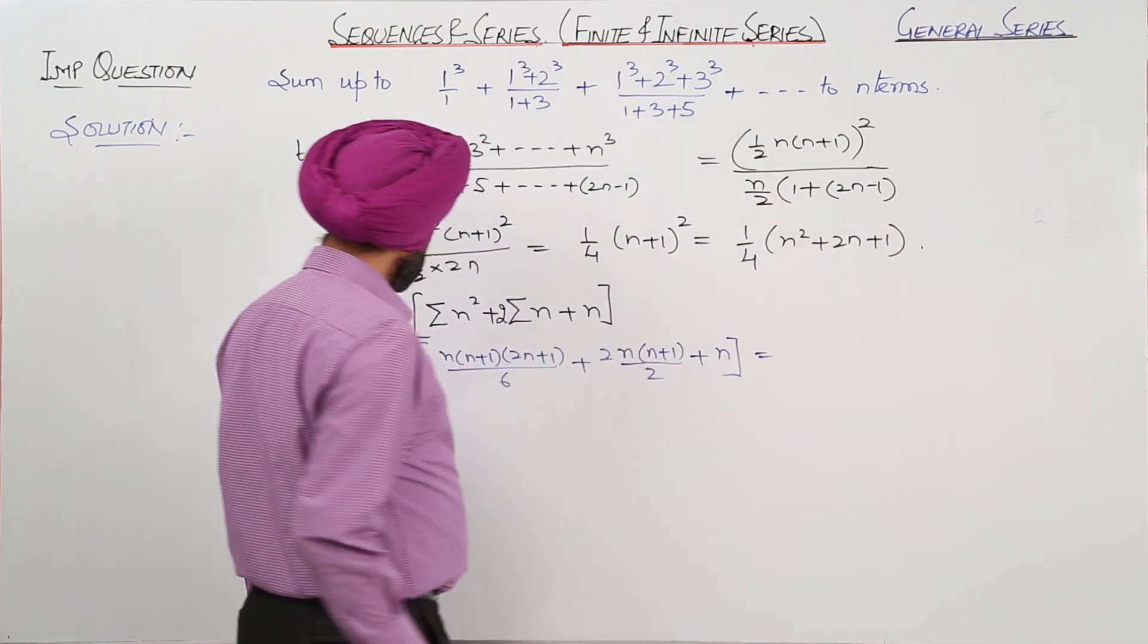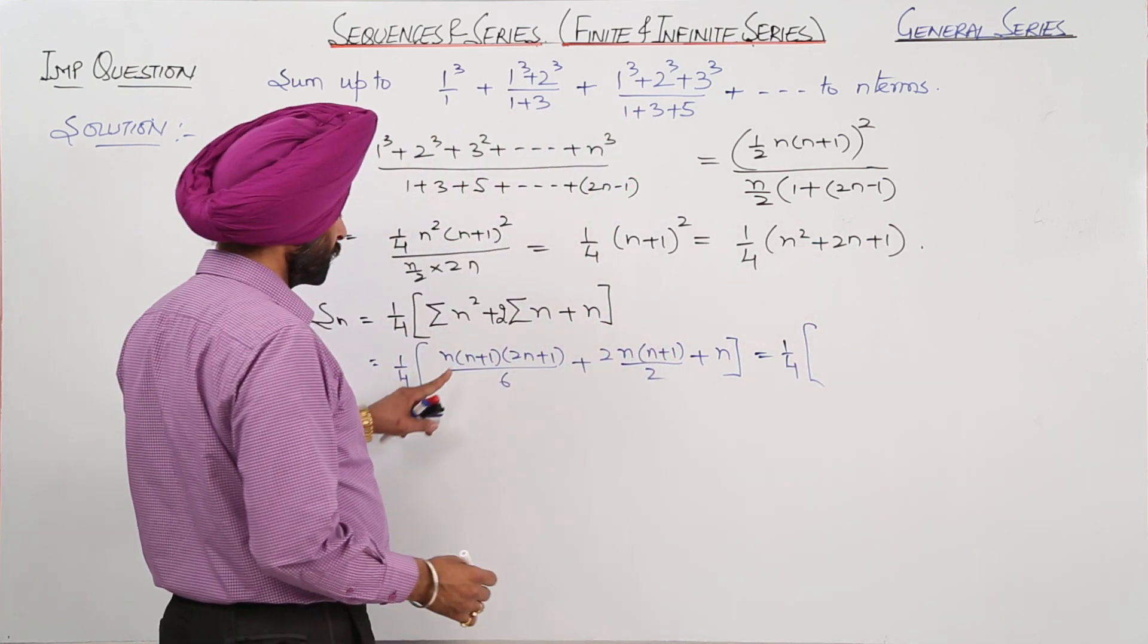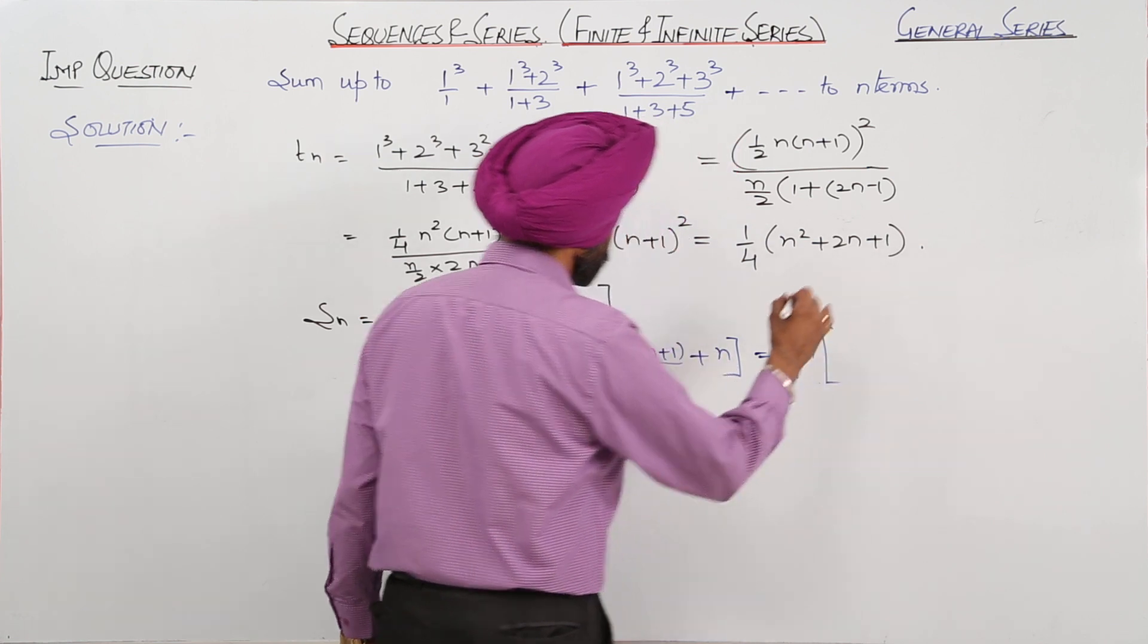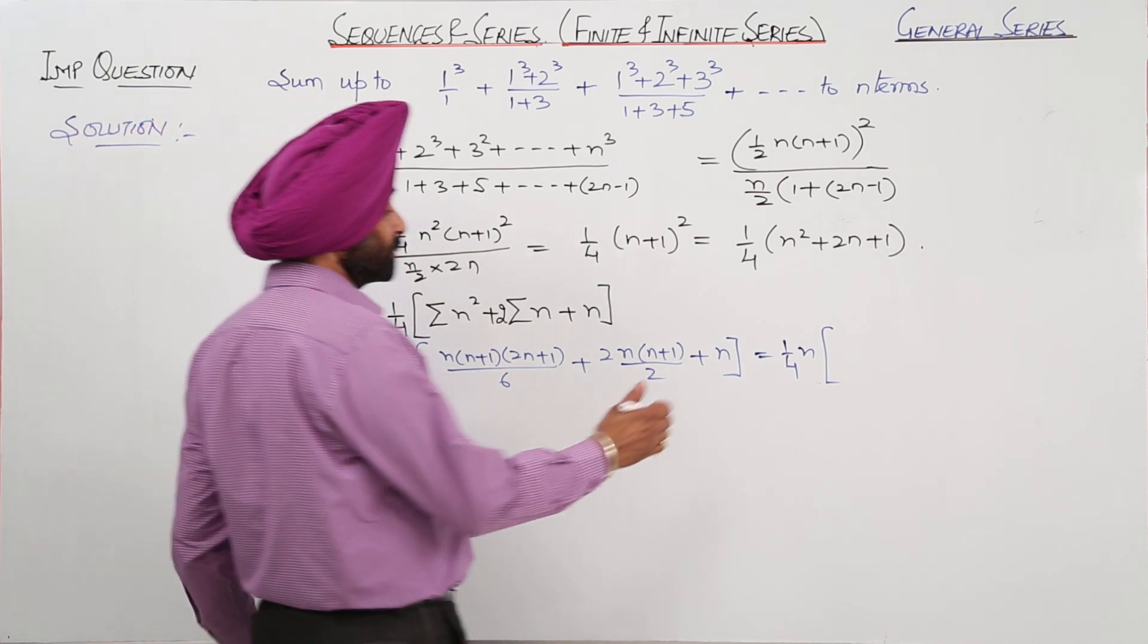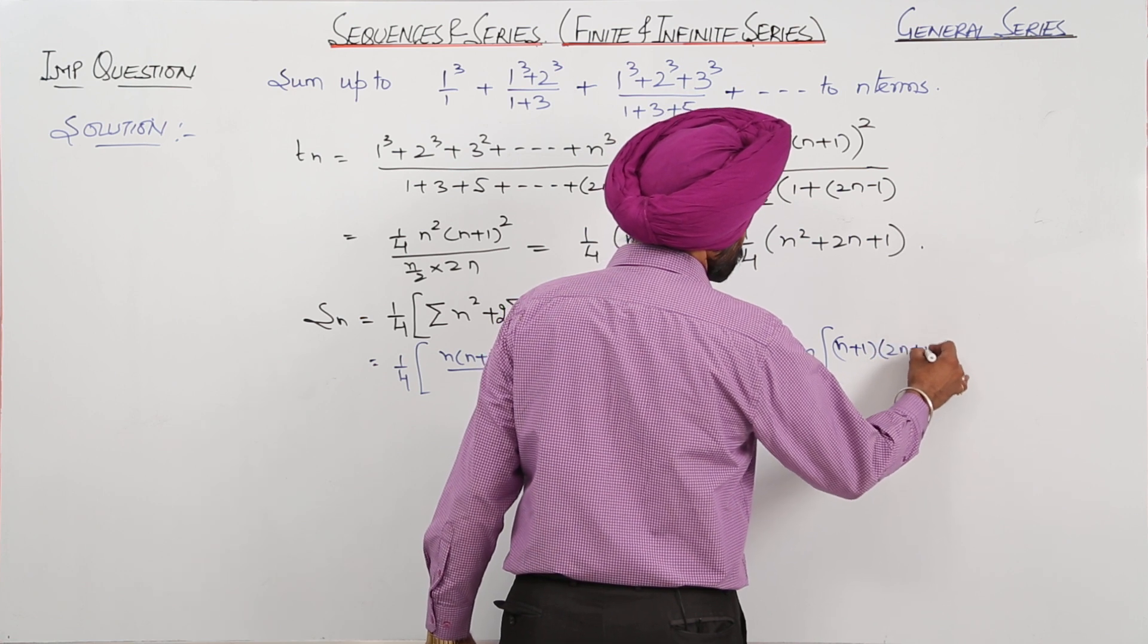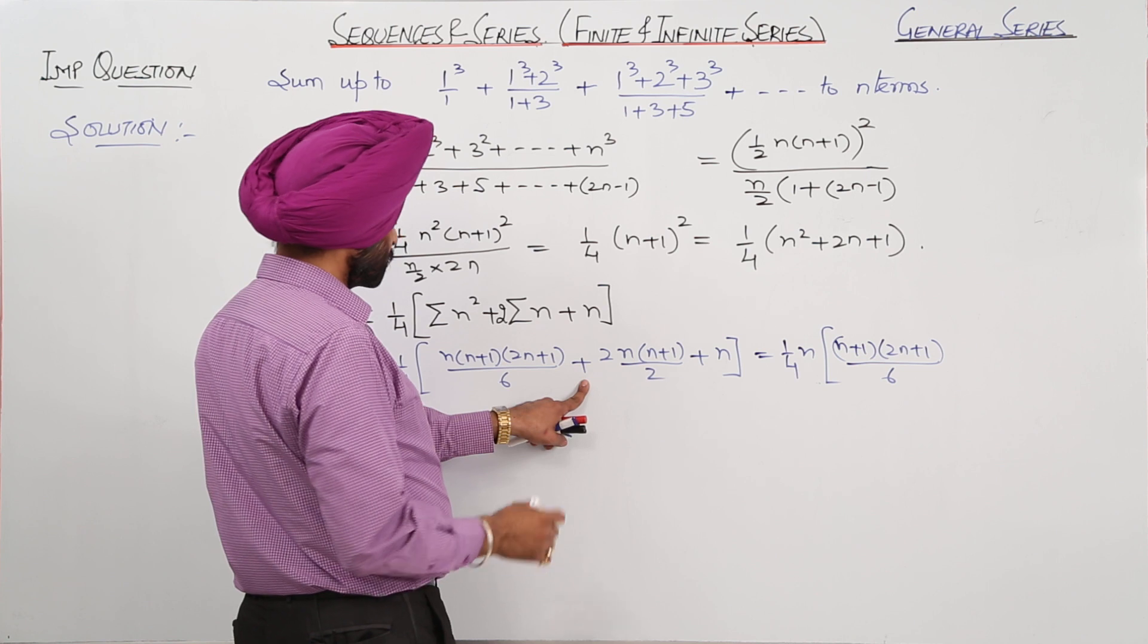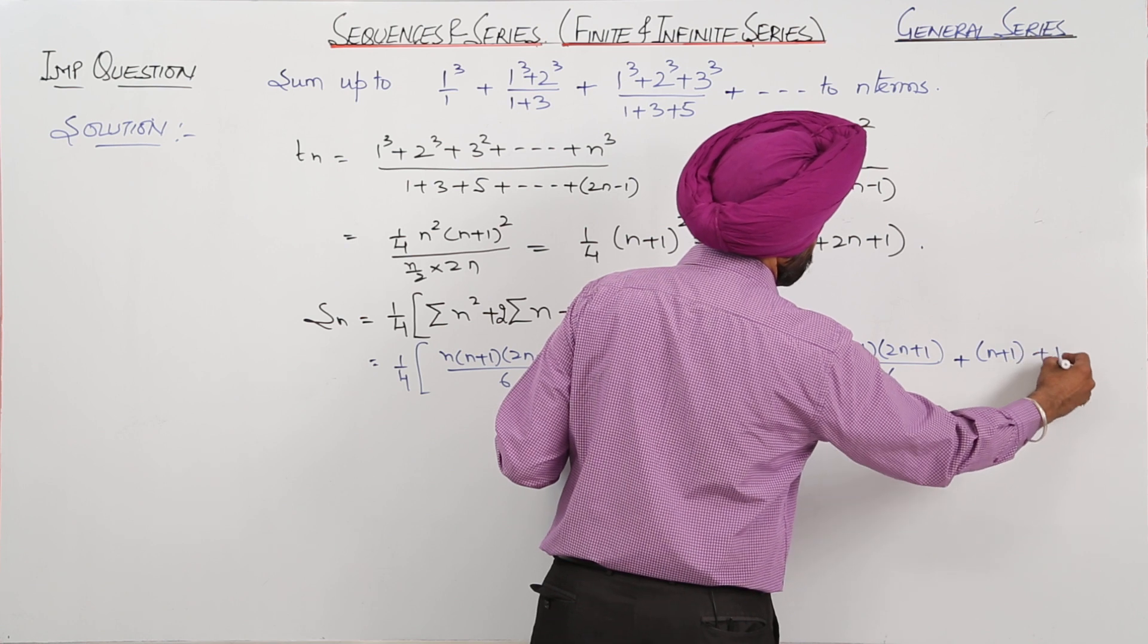Now this becomes 1/4. We can even take n as common, taking n common from each all the three terms, first, second and third. So what is left? (n+1)(2n+1) from this part upon 6, plus n we have already taken common, (n+1) plus 1.